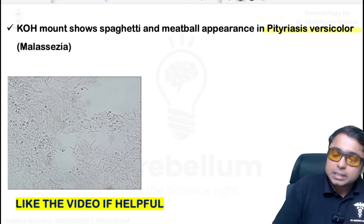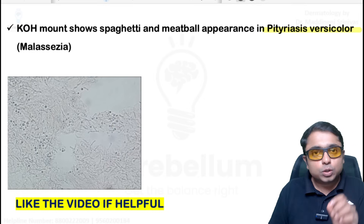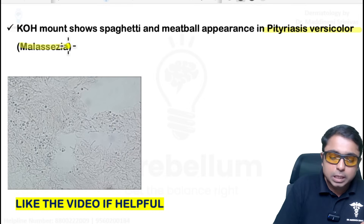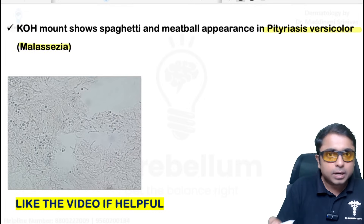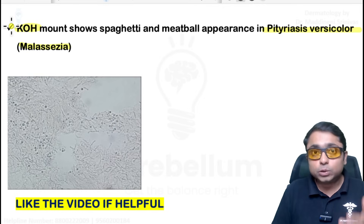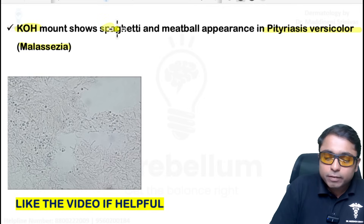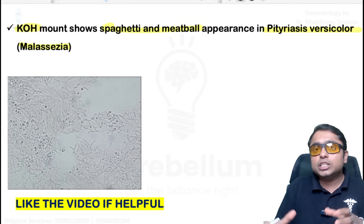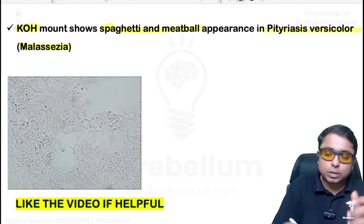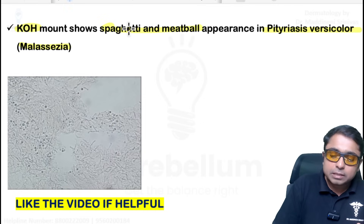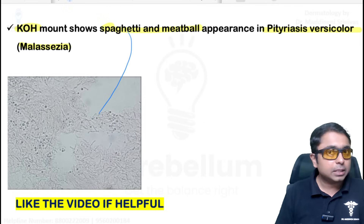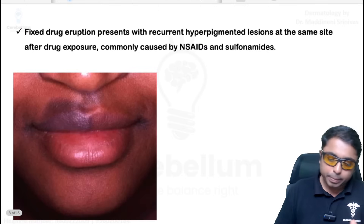Pityriasis versicolor is a superficial fungal infection due to Malassezia globosa and Malassezia furfur. For diagnosis, a potassium hydroxide mount is used, in which we see a combination of spores and hyphae giving rise to a spaghetti-and-meatball appearance.